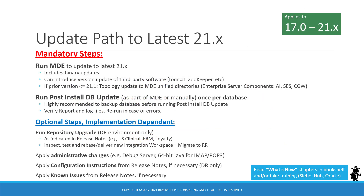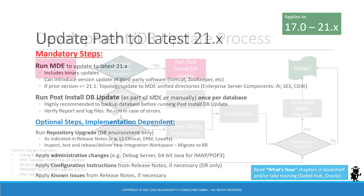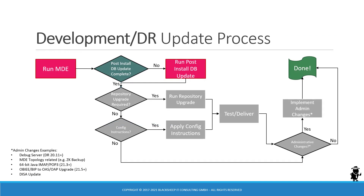As a reminder, your update path to the latest 21.x — version 21.9 — is the same as before if you are on anything higher than 17.0. You run the Modular Deployment Engine in update mode, then run the post-install database update, which is automatically included in the MDE or can be run manually, but must be run once per database or environment. Watch out for additional steps such as the non-mandatory repository upgrade or any administrative changes.